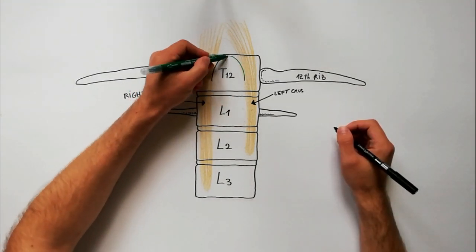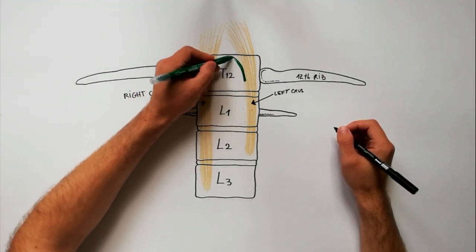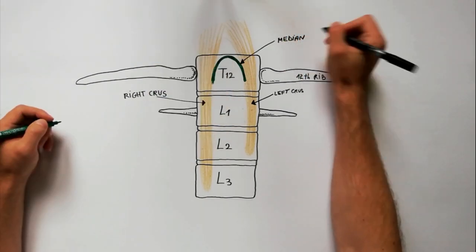The median archoid ligament is an arched fibrous band stretching between the upper ends of two crura.